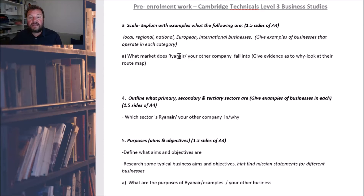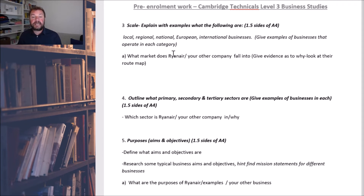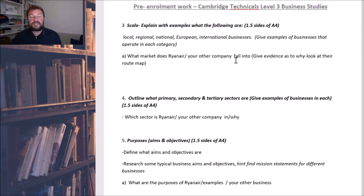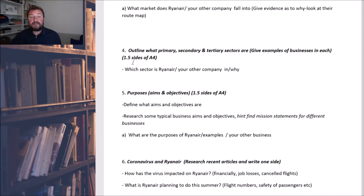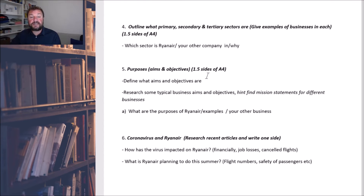You need to find out the scale of the business — so is it a local, national, regional, or international business — and find examples as to why they are. So Ryanair: why are they an international business? Could it be because of where they fly to? Note that I've given you guidance on how much you should write on each of these points. Then we've got: are they in the primary, secondary, or tertiary sector? What are they? And again, apply it to which one your business is in and why.